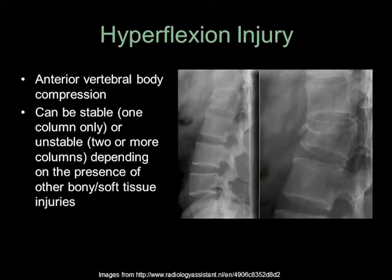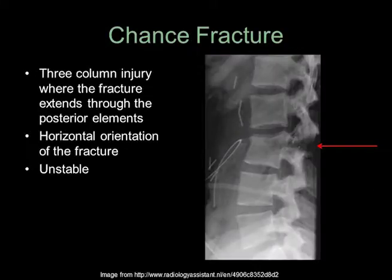With a hyperflexion injury, the anterior vertebral body is compressed. These can be stable if only one column is involved, or unstable if two or more columns are involved. A chance fracture is a three-column injury where the fracture extends through the posterior elements. The fracture line has a horizontal orientation. This is considered unstable because it goes through all columns.